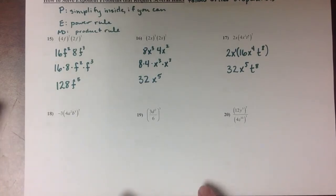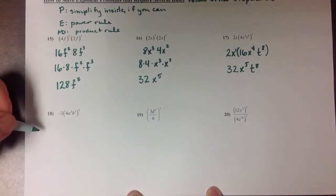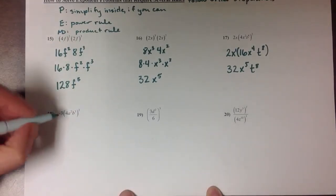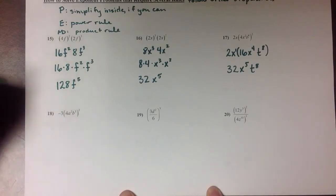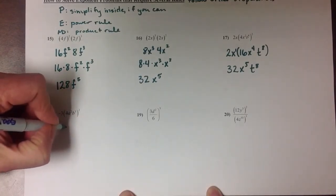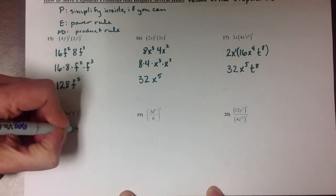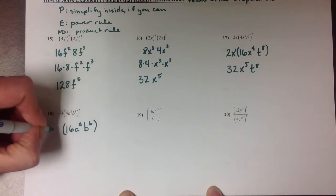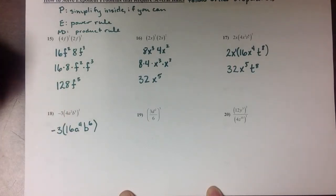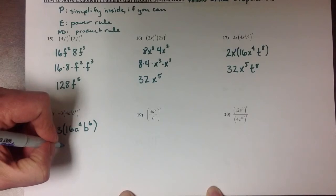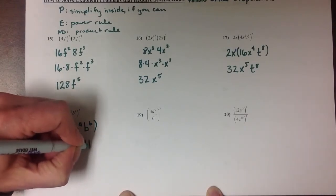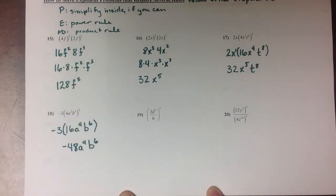Let's look at a couple more examples of combining these different rules of exponents. In number 18, we've got a 2 to distribute over each of the factors inside our parentheses here. So this will become 16a to the 4 b to the 6, and all of that's being multiplied by negative 3. So negative 3 times 16 gives us negative 48 a to the 4 b to the 6.